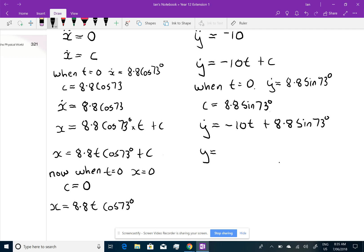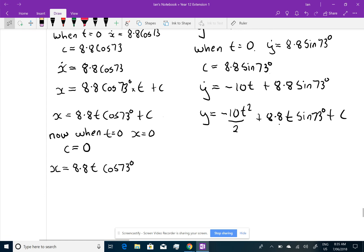To get the displacement, I'm going to integrate that. So, that's minus 10 t squared, divide by 2, plus 8.8. Now, I hope you don't mind, I'm going to put the t in straight away there, sin 73 degrees, plus another constant. I'm not labelling these constants c1, c2, c3. I'm just putting them as c. You should be able to work out where they are and what they represent.